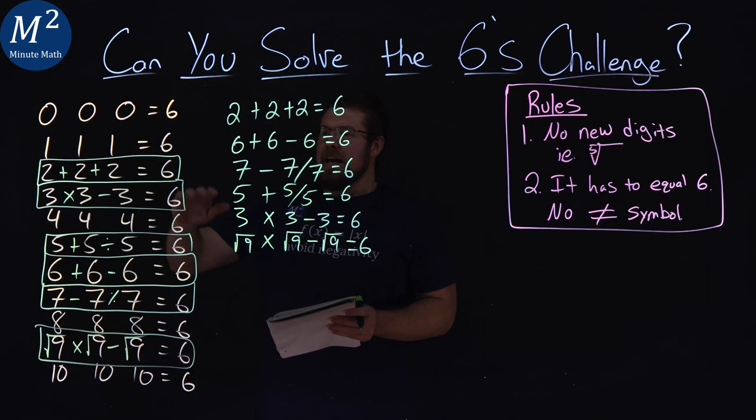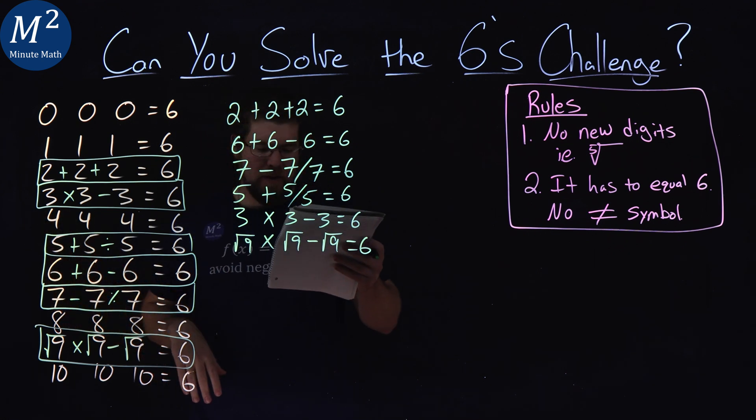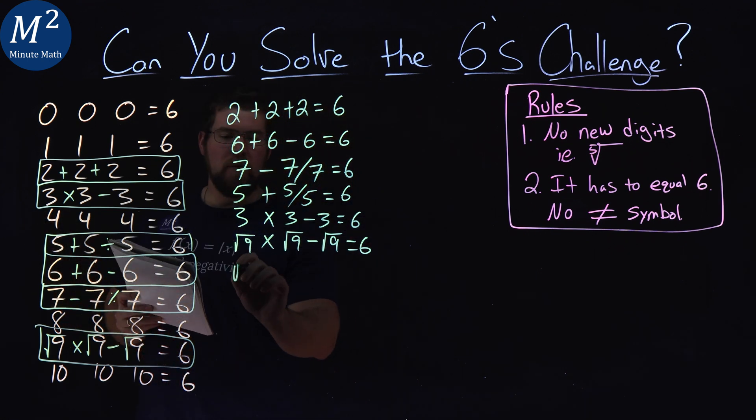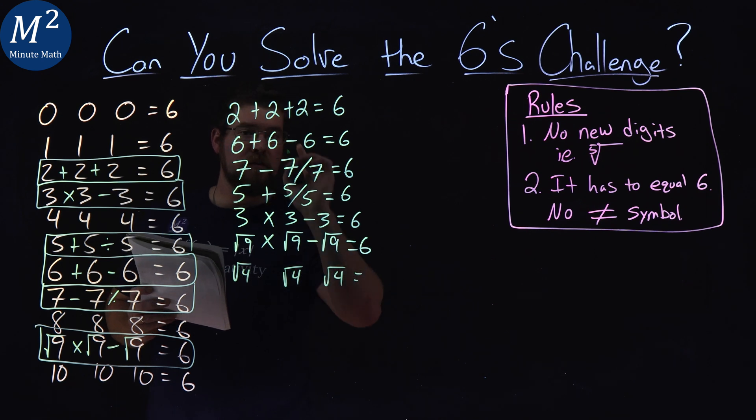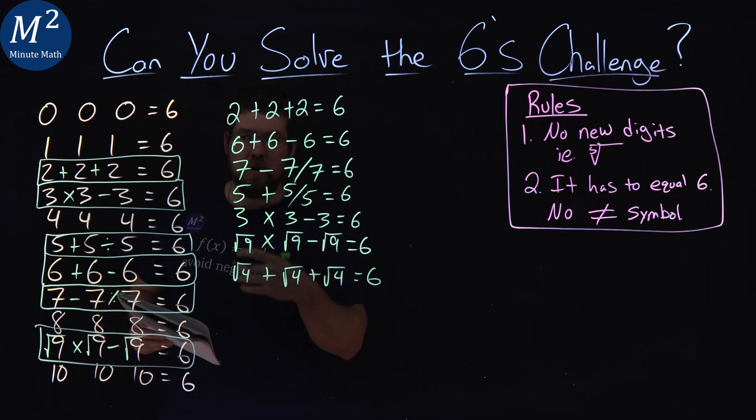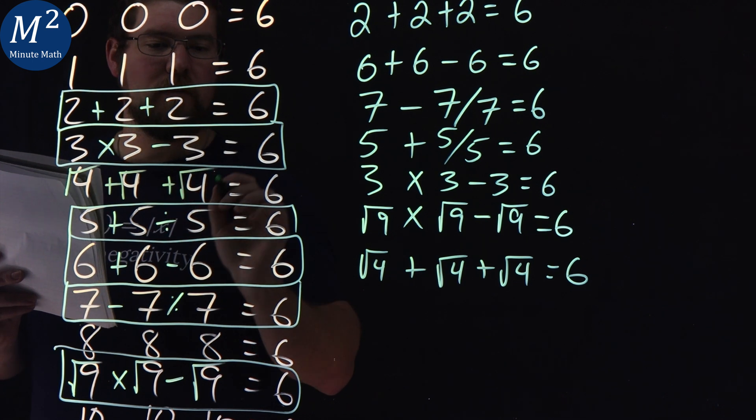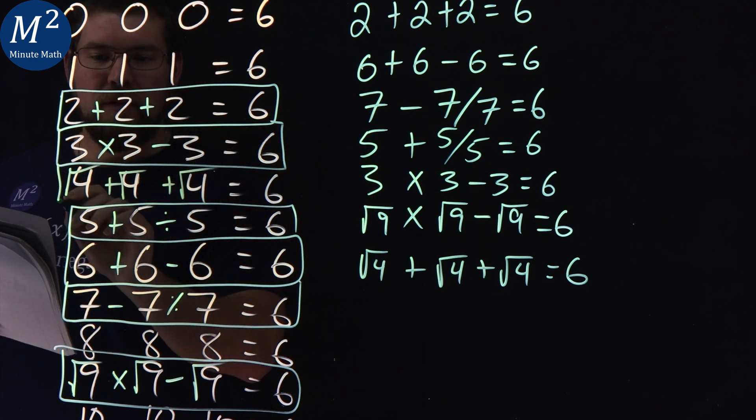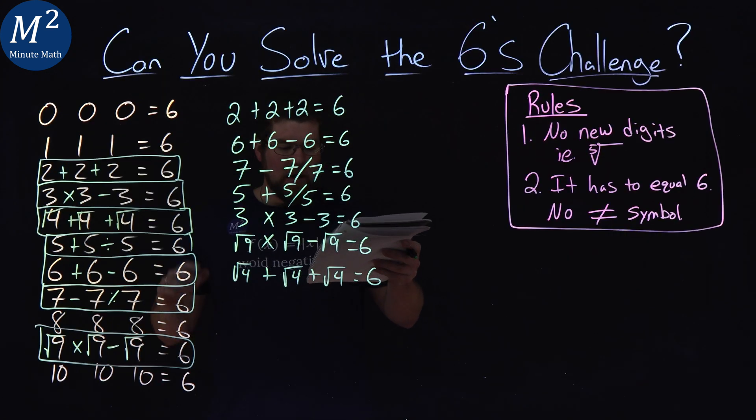Moving on. In a similar way that we dealt with square roots of nine, we can do the same with the fours. The square root of four is a two, right? And we've already solved the two ones. Plus, plus gives us a six. So square root of four plus square root of four plus square root of four, all of them being twos, they add up to good old six.